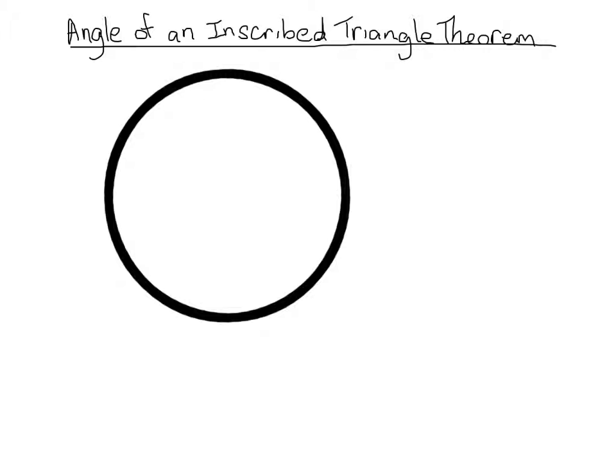For the rest of this video, our theorems will be specific to inscribed polygons. An inscribed polygon means that if I have a circle and inside I have a triangle, every vertex of the triangle touches the circle — then my triangle is said to be inscribed.